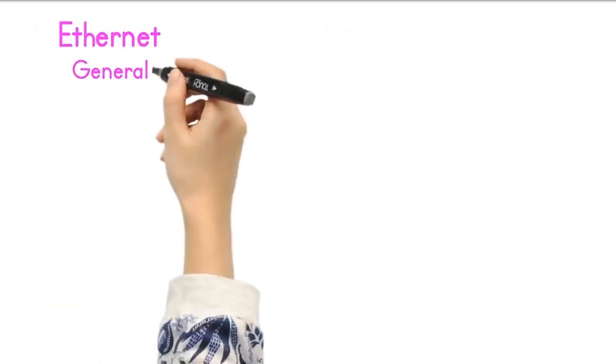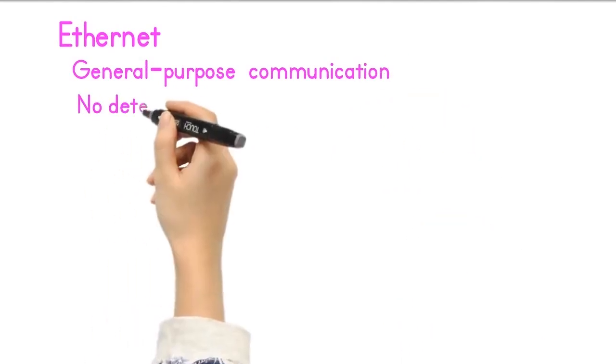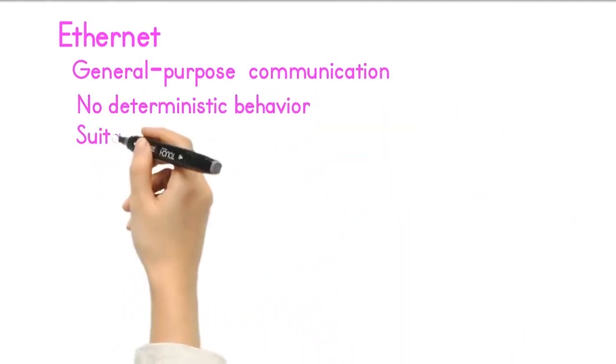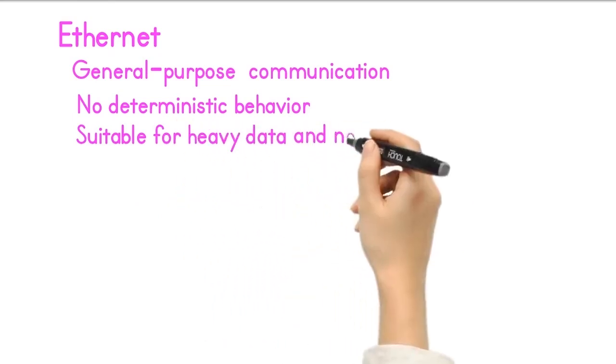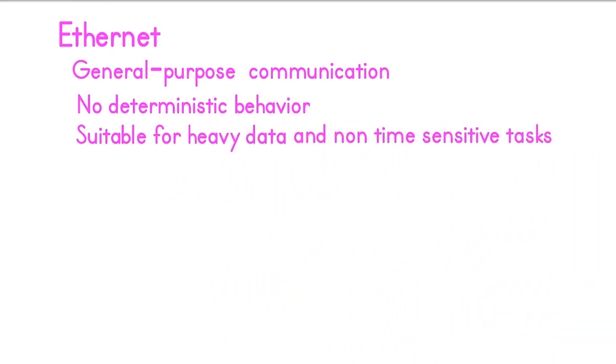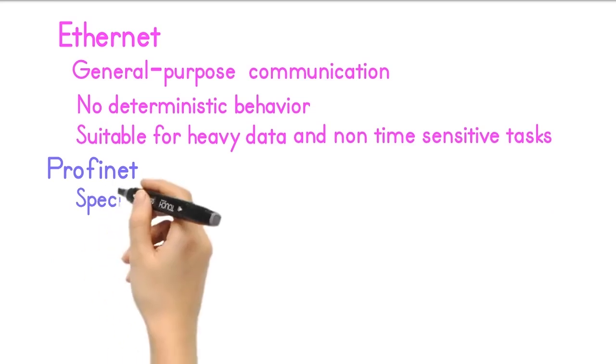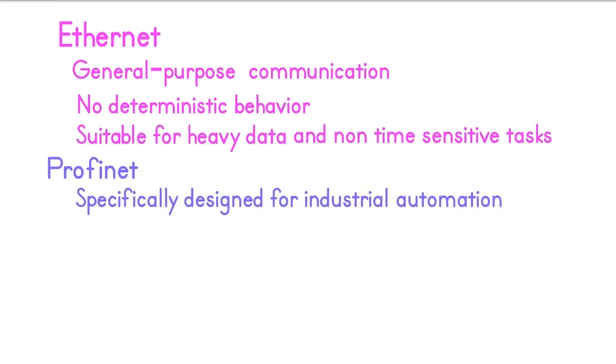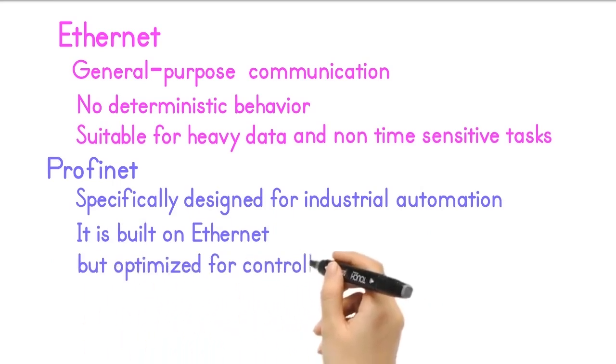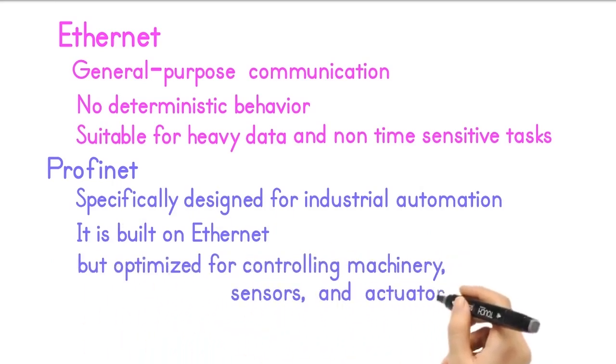Ethernet is general-purpose communication with no deterministic behavior. It is suitable for heavy data, non-time-sensitive tasks like file transfers and web browsing applications, while Profinet is a communication protocol specifically designed for industrial automation. It is built on Ethernet, but optimized for controlling machinery, sensors, and actuators in real-time.